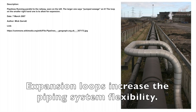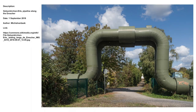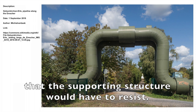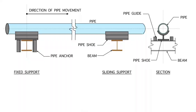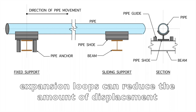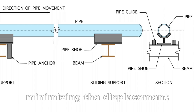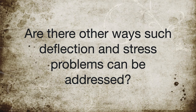One way of addressing this problem is by installing expansion loops. Expansion loops increase the piping system's flexibility — they allow the pipe to deflect within the loops and thus relieve stress. They also reduce the amount of anchor forces that the supporting structure would have to resist. The longer the loop leg, the more flexible and less stressed the system becomes. In the case of pipes with one unrestrained end, expansion loops can reduce the amount of displacement at the sliding end. If the pipe is sitting on a shoe, minimizing the displacement would shorten the required length of the shoe.